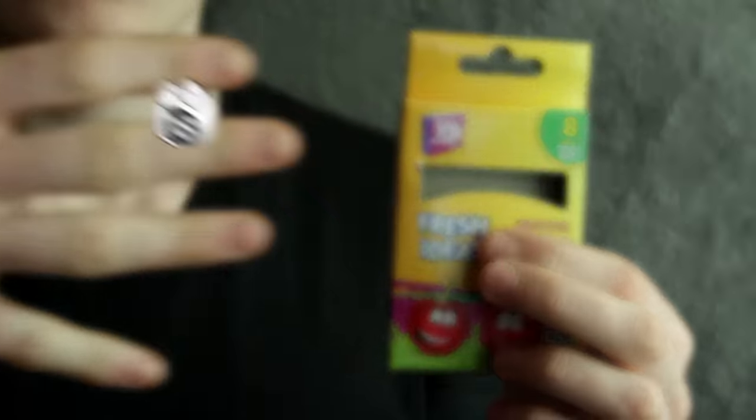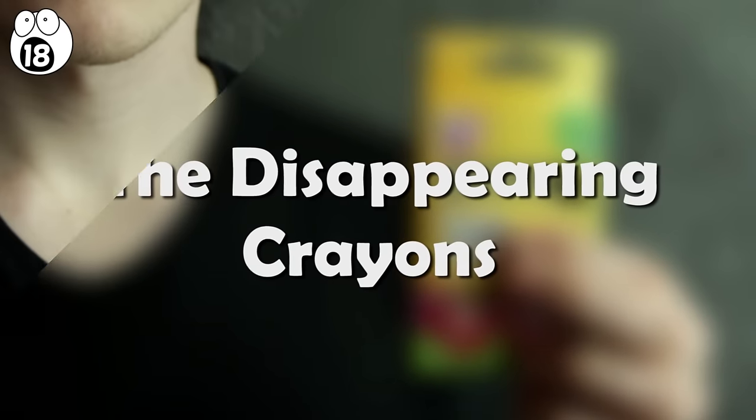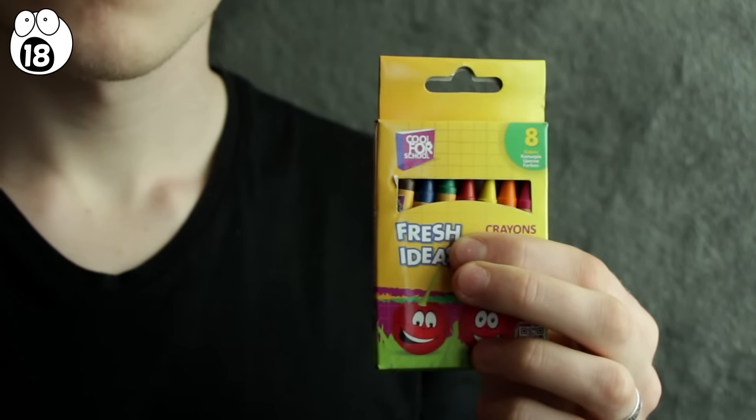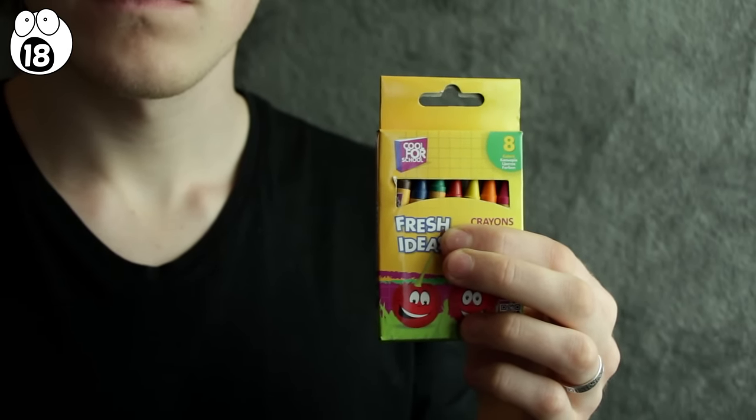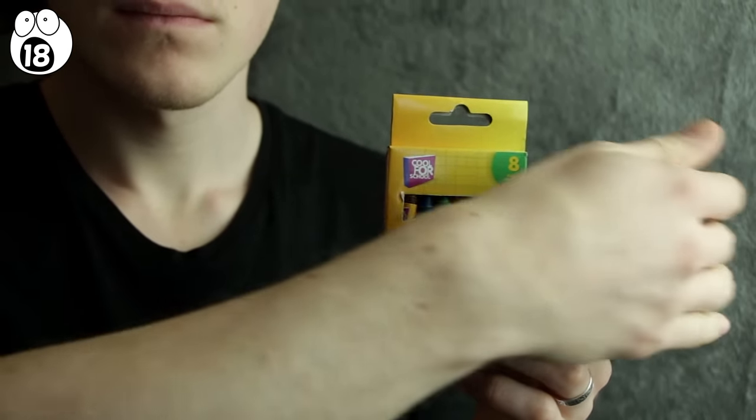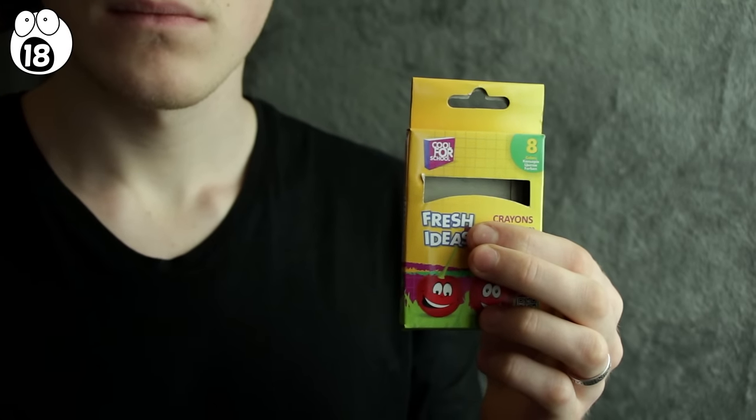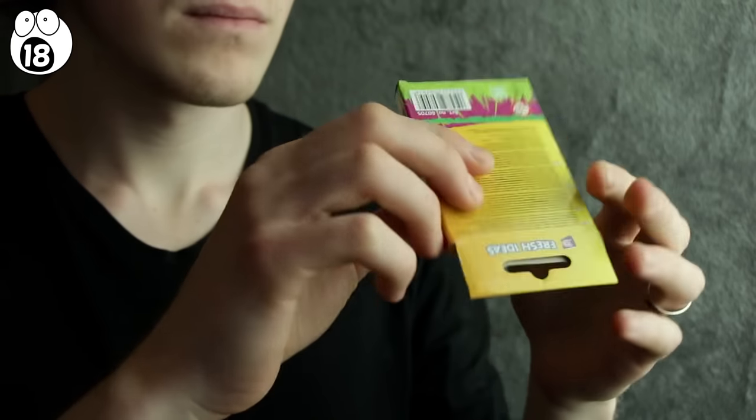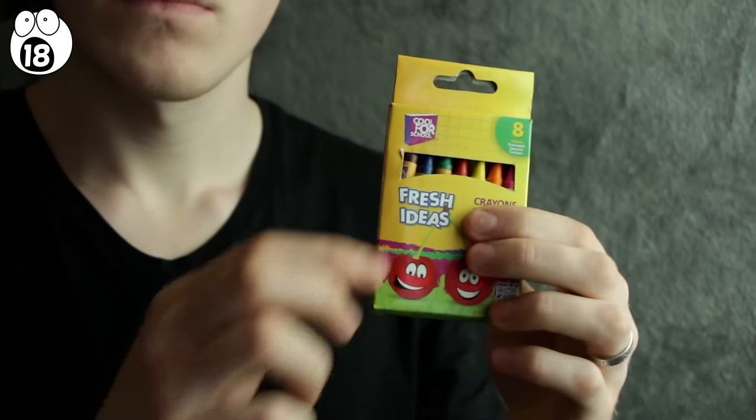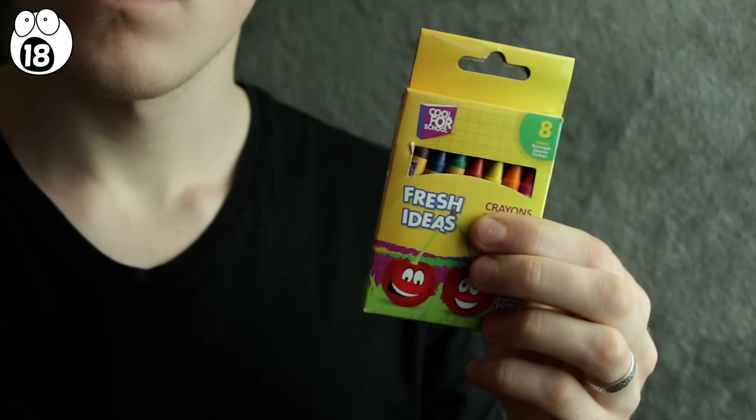Number 18. The Disappearing Crayons. Take a box of crayons. Hold it out in front of the audience. Before their very eyes, you're going to make the crayons inside the box disappear. Wave your hand over the crayons in a suitably theatrical manner, and suddenly, poof, the crayons are gone. To get the crayons back, all you have to do is turn the box over, and the crayons have magically reappeared.